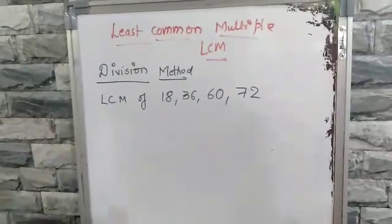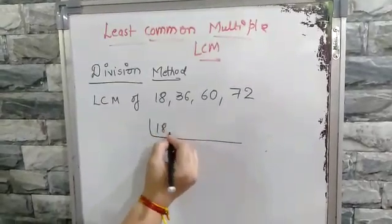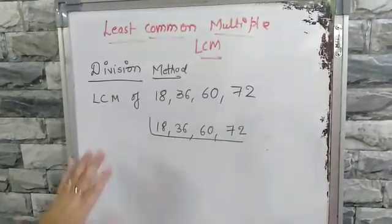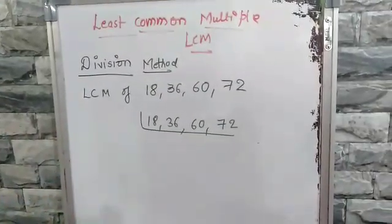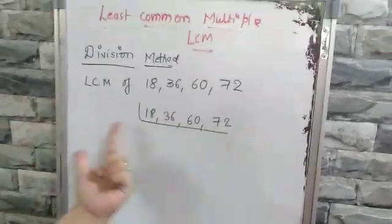In the division method, you take all the numbers together in the column method like this. Now find out the smallest prime number, which is 2. Is there any number which is divisible?